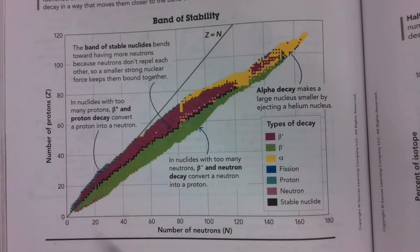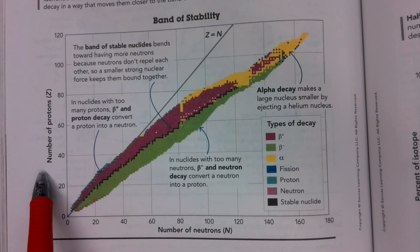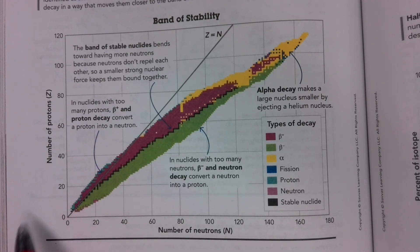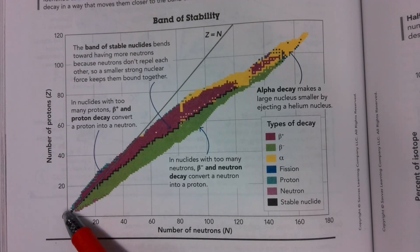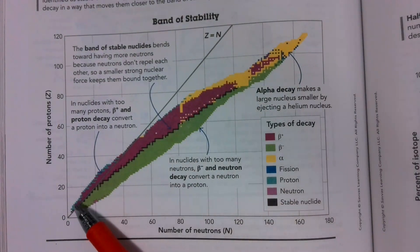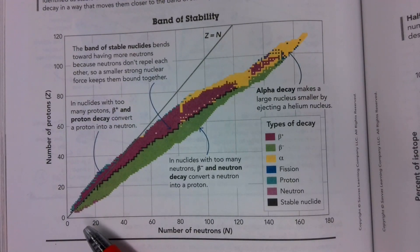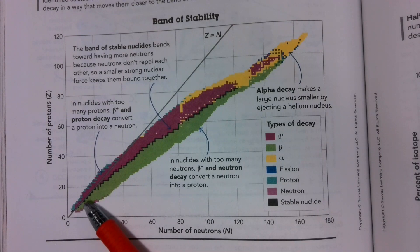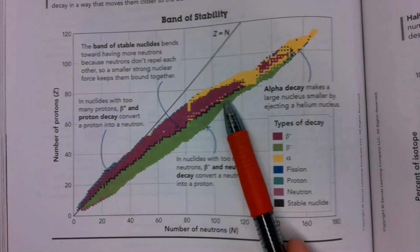This is essentially a chart that shows the proper ratios of neutrons to protons — the two particles found in the nucleus of the atom. And if we notice here, there's this line that represents a one-to-one ratio of protons to neutrons. In the beginning, it follows this line pretty well, and then it starts to veer off.